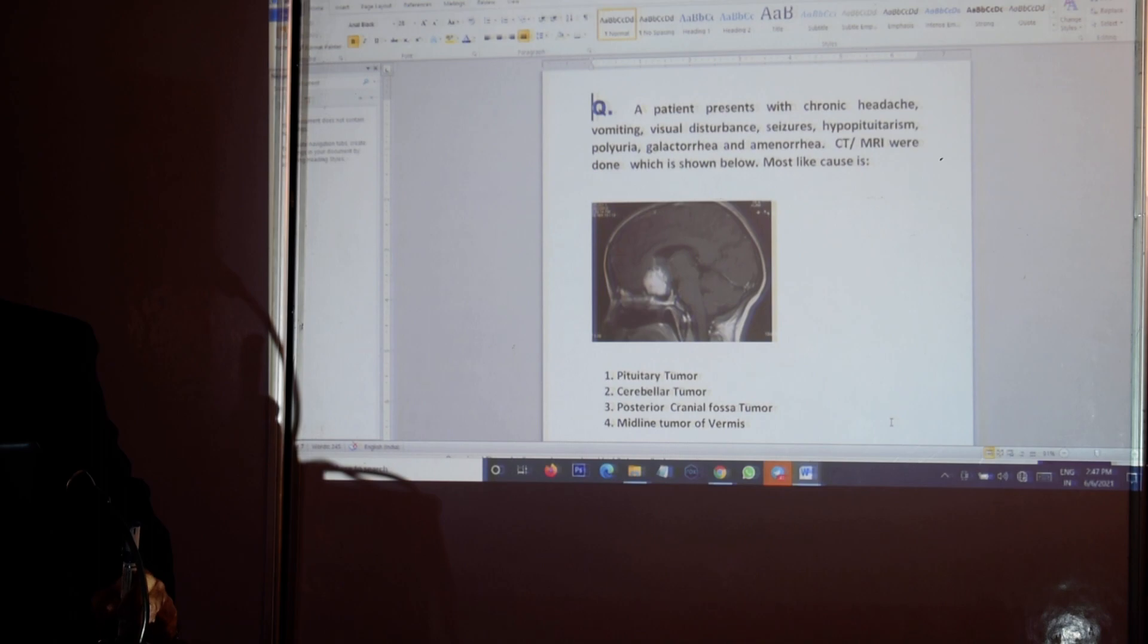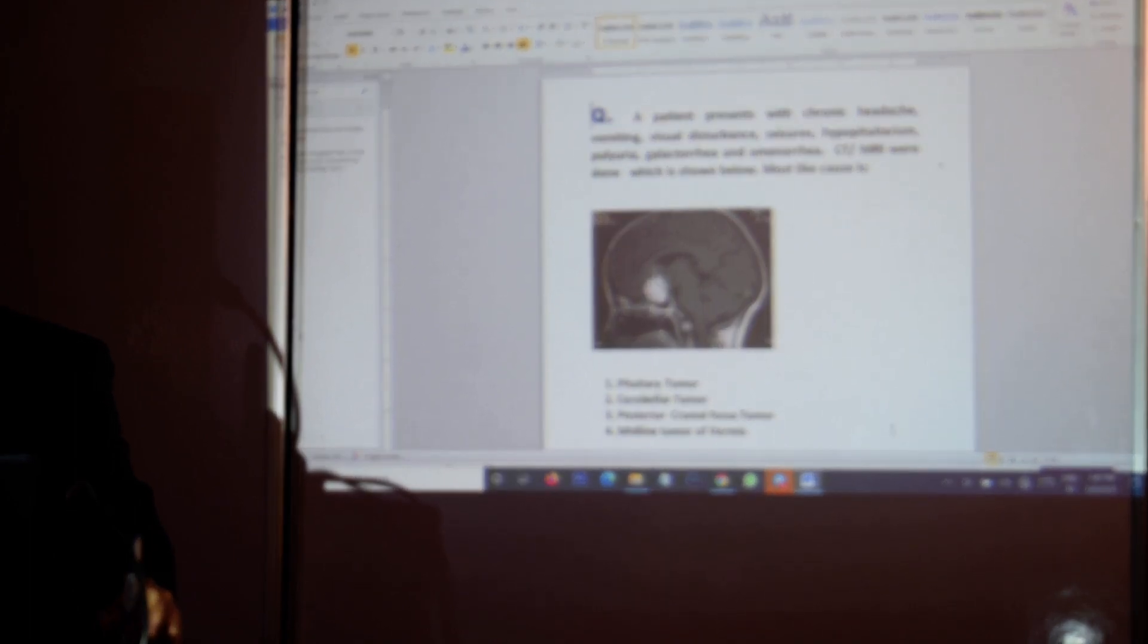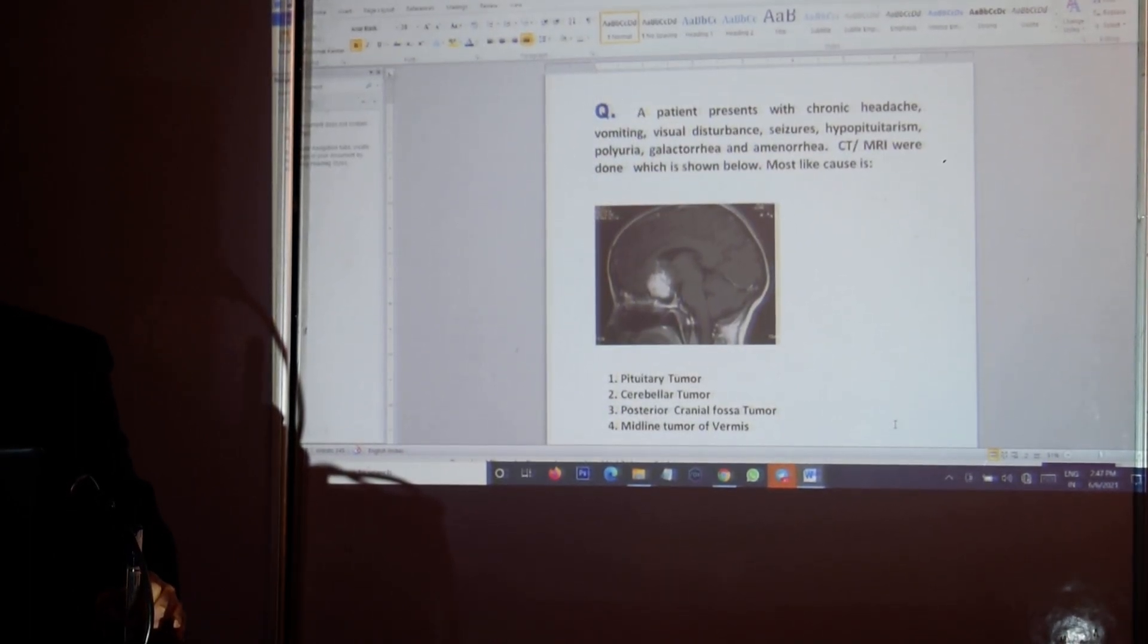This describes a patient with chronic headache, vomiting, visual disturbance, seizures, hypopituitarism, polyuria, galactorrhea and amenorrhea. CT is shown and the most likely cause is pituitary tumor, cerebellar tumor, posterior cranial fossa tumor, and midline tumor of the vermis. Different anatomico-surgical locations are given and you have to arrive at a diagnosis.